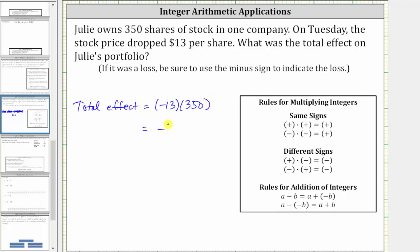And now we need to determine what 13 times 350 is, or 350 times 13. Let's work this out below. We have 350 times 13.